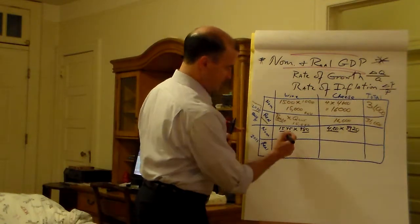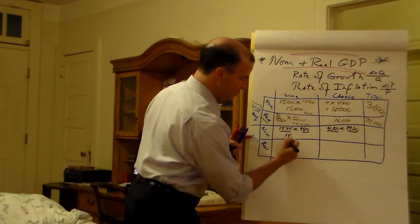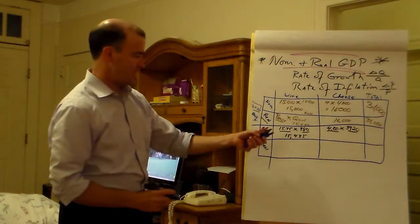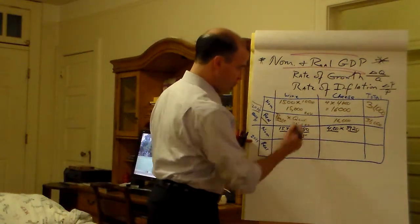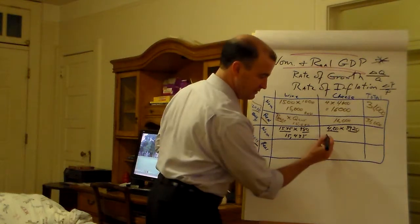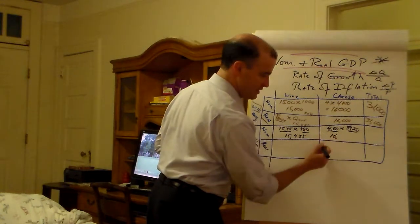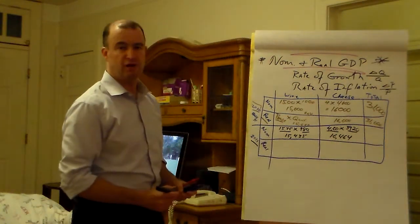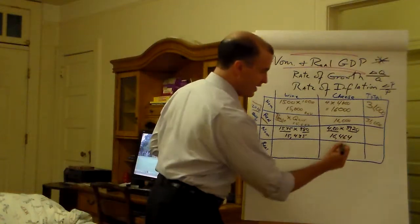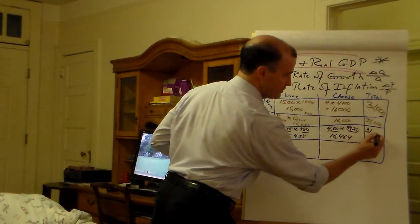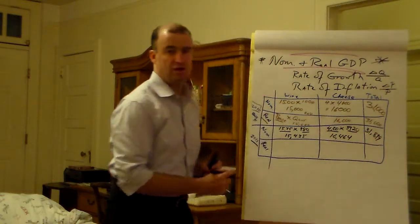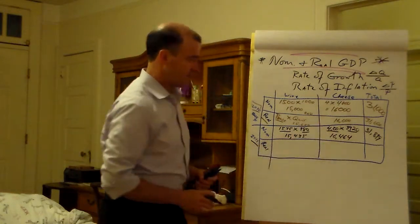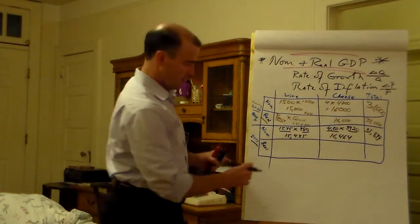I've worked it out. I couldn't do this in my head, so I've worked it out. I have $15,435 for a nominal revenue flow for wine in the second year, 2011. I have $16,464 for the cheese nominal revenue flow in the second year. All told, that's $31,899. You could stop the video now and double check my work. I've double checked that it should be right.